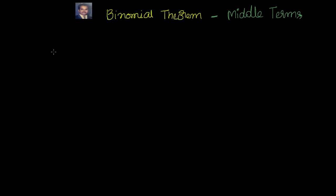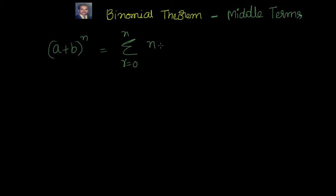In this video we will look at how to find out the middle term for a binomial expansion. Let me first do it for (a + b)^n, which is nothing but sigma r equal to 0 to n of nCr · a^(n−r) · b^r.